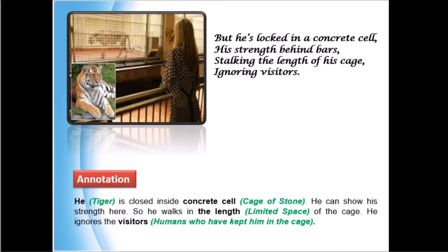Whenever the tiger tries to attack or scare the visitors, he cannot attack them because he is locked up in the cage — in the strong building material of a strong cell. This is the explanation for stanza four.